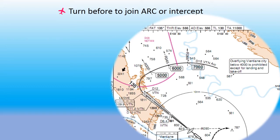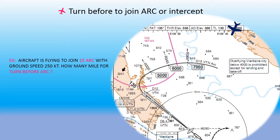Turn before to join arc or intercept. Following the example: aircraft is flying to join a 15 DME arc with ground speed 250 knots. How many miles before the arc to start the turn? For this, I will show you on the approach chart. In some approach charts, they put a point to turn to join the arc. We will calculate how to find this point.